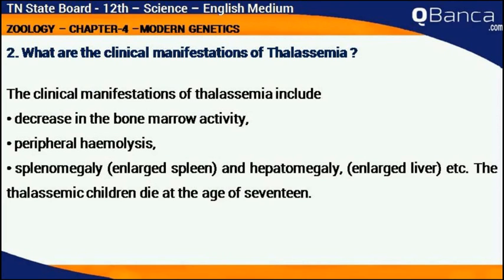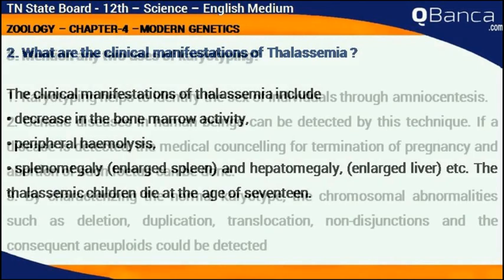What are the clinical manifestations of thalassemia? The clinical manifestations of thalassemia include decrease in the bone marrow activity, peripheral hemolysis, splenomegaly and hepatomegaly. The thalassemic children die at the age of 7.